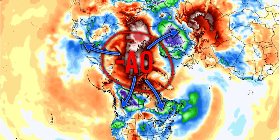The AO is the number one teleconnection you want to pay attention to — it pretty much dictates most of the winter. The NAO and PNA are important, but not quite as important as the AO in my opinion. The AO is the most important factor in the winter season. Now we're going to show what a positive AO looks like and the conditions it causes, and then we'll start talking about snowpack, which is another very crucial key element to the upcoming winter.